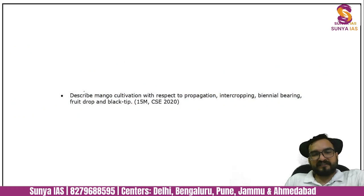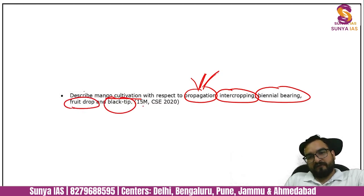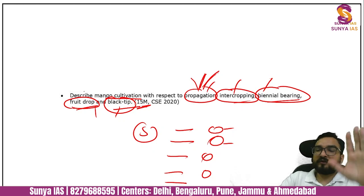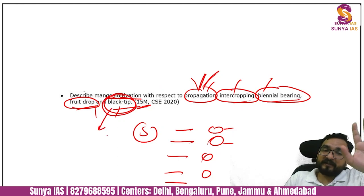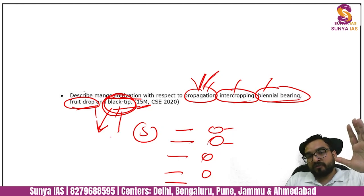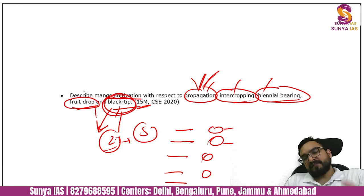See the question asked in 2020: 'Describe mango cultivation with respect to propagation — veneer grafting, epicotyl grafting, and inarching — intercropping, biennial bearing, fruit drop, black tip.' That's a 15-marker with five headings — meaning only two to three lines are needed on each: propagation, intercropping, biennial bearing, fruit drop, and black tip. You should not go into too much depth on any one aspect, because that will kill your time. And with that, mango is completed in this lecture.